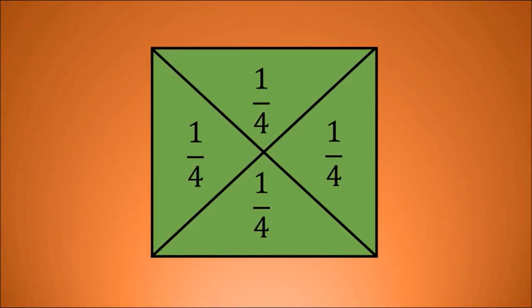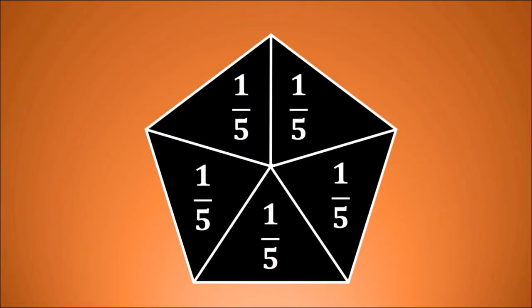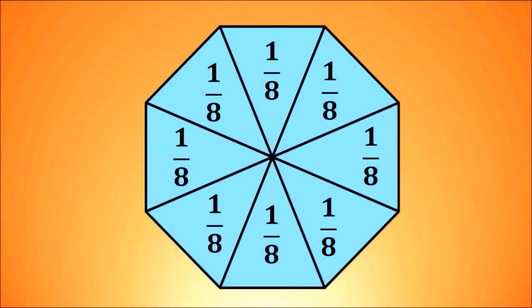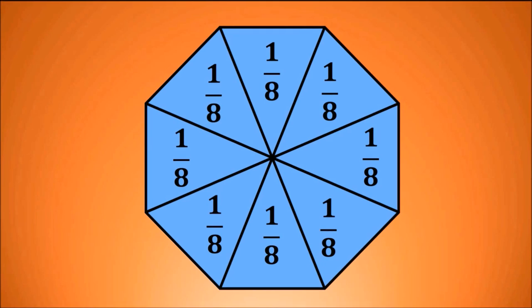You can do this with any regular polygon from triangles, squares, pentagons, octagons as well. Any regular polygon can be divided up into equal portion triangles, which can be partitioned and labeled as unit fractions.